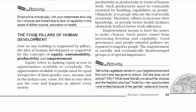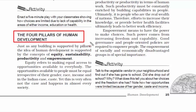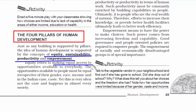We are now going to read about the four pillars of human development. There are actually six, but in this chapter we'll read about four. These pillars are equity, sustainability, productivity, and empowerment. The other two are cooperation and security.